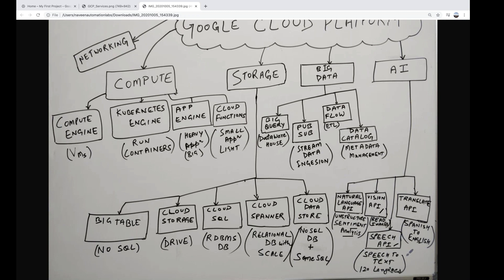The Speech API converts speech to text. For example, if voice messages or broadcasts are coming in, you can convert them to text — useful for national security agencies analyzing voice messages. GCP's Speech API supports around 120 languages including Chinese, Arabic, and English, converting voice messages into text accordingly.